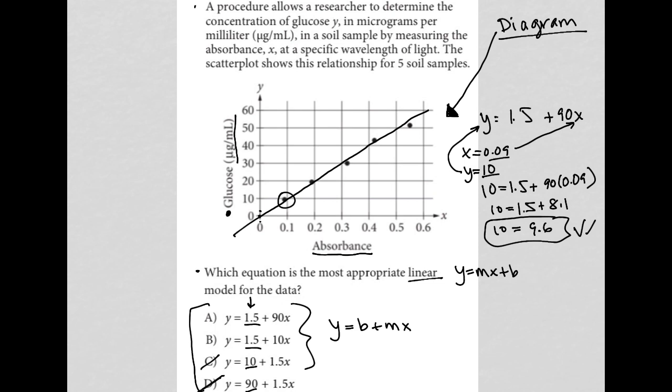For choice B, let's try the exact same thing. So Y equals 1.5 plus 10X. And again, using my same numbers, that would turn into 10 equals 1.5 plus 10 times 0.09. And we already know that that's going to be way off. There's no way that's even close because this would be like 1.5 plus 0.9. And that's nowhere close to being 10. So for that reason, B is gone.